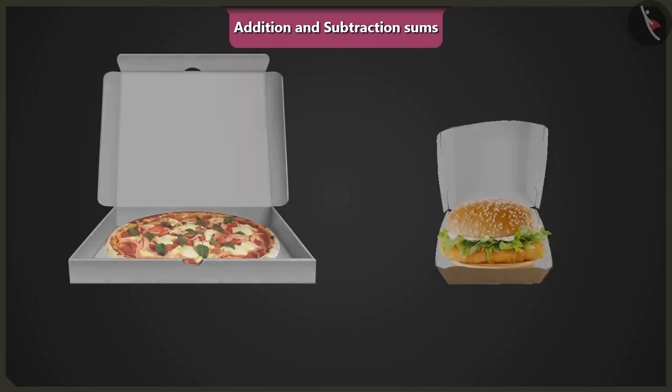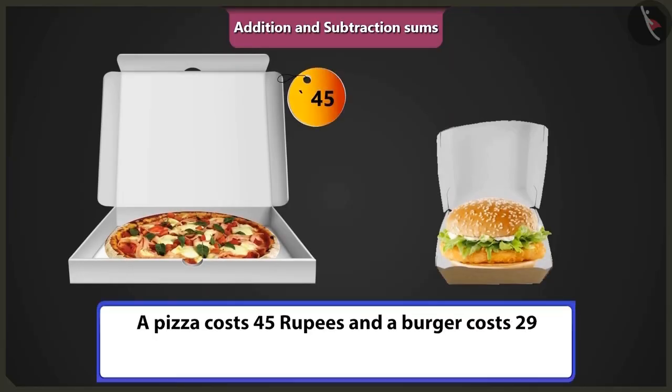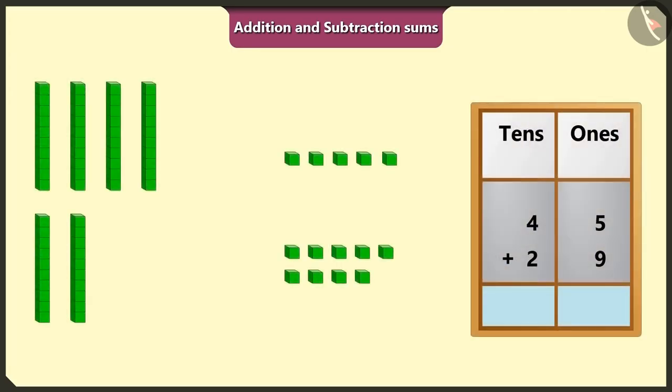Choo Choo, pizza costs 45 rupees and burger costs 29 rupees. So what will be the total cost of both? Come on, let's put 45 and 29 in the box of ones and tens and do their addition.